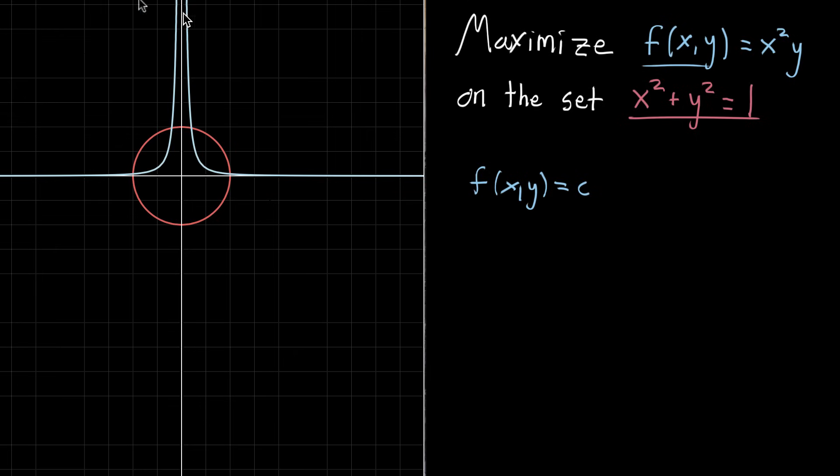Then the way to think about maximizing this function is to try to increase that value of c as much as you can without it falling off the circle. And the key observation is that happens when they're tangent.